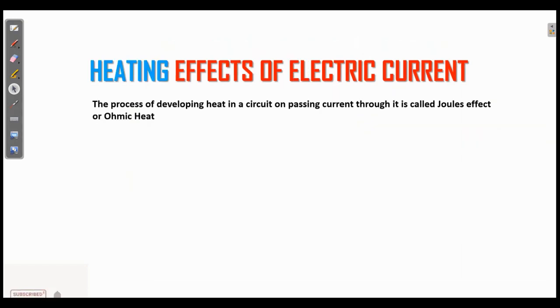The process of developing heat in a circuit on passing current through it is called Joule's effect, or ohmic heat. That's an important question: explain Joule's effect. And there is a theory behind it, and a formula, which is Joule's law.